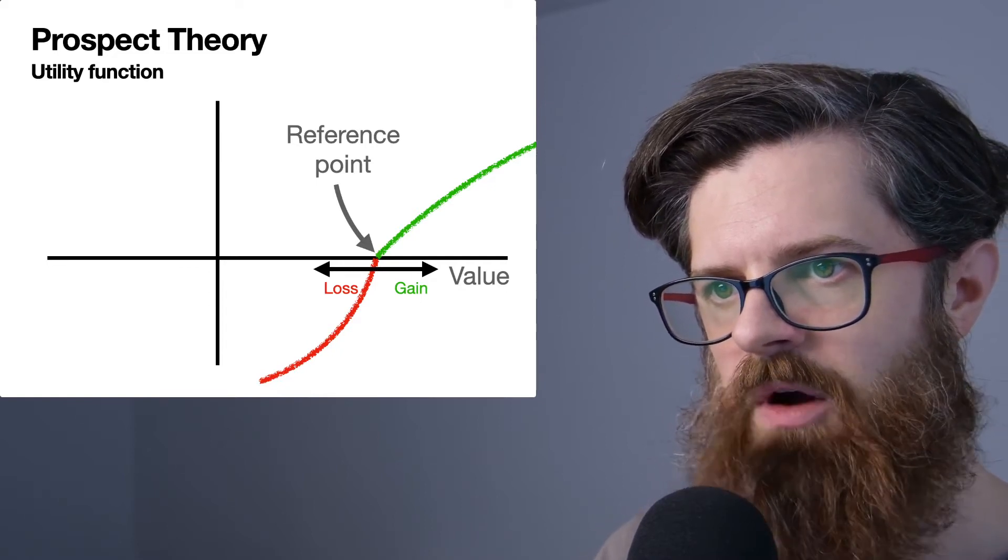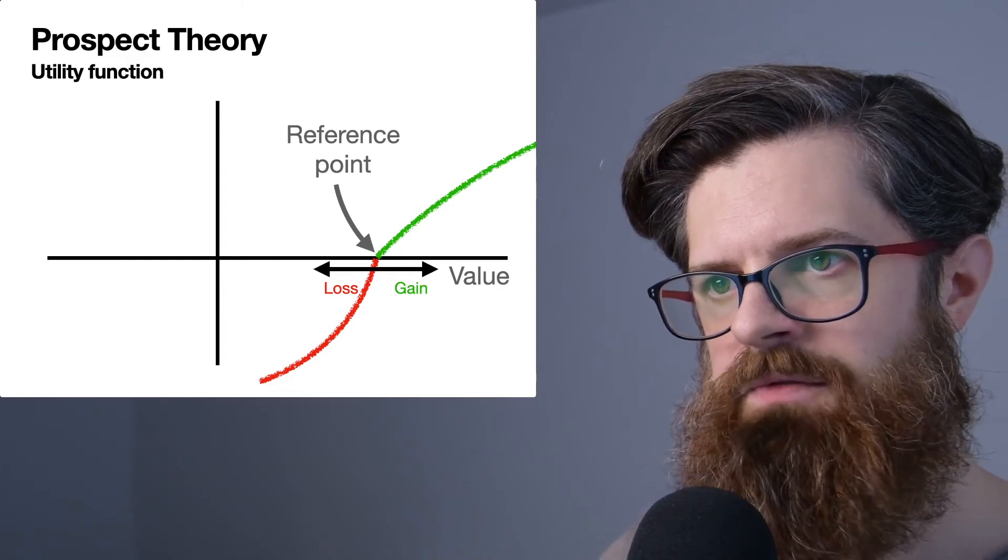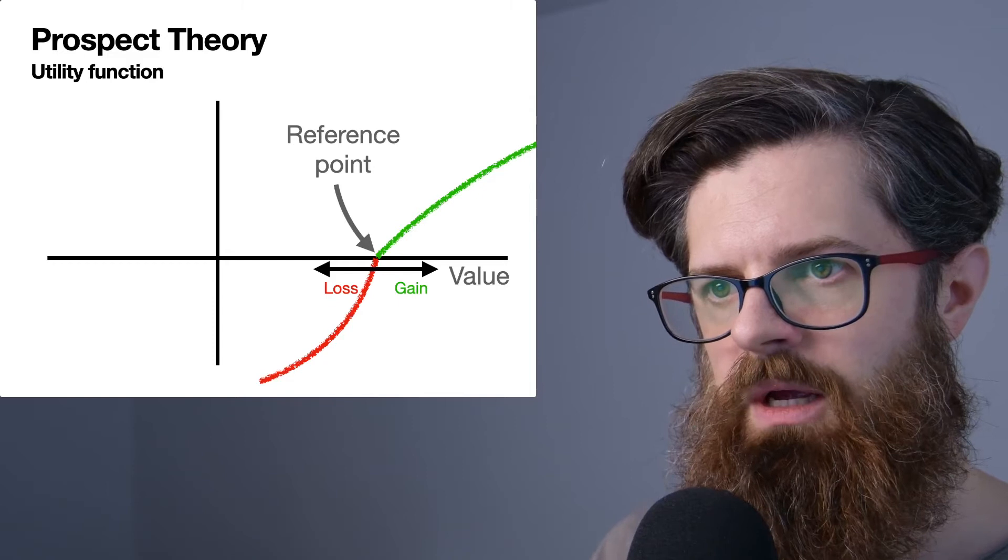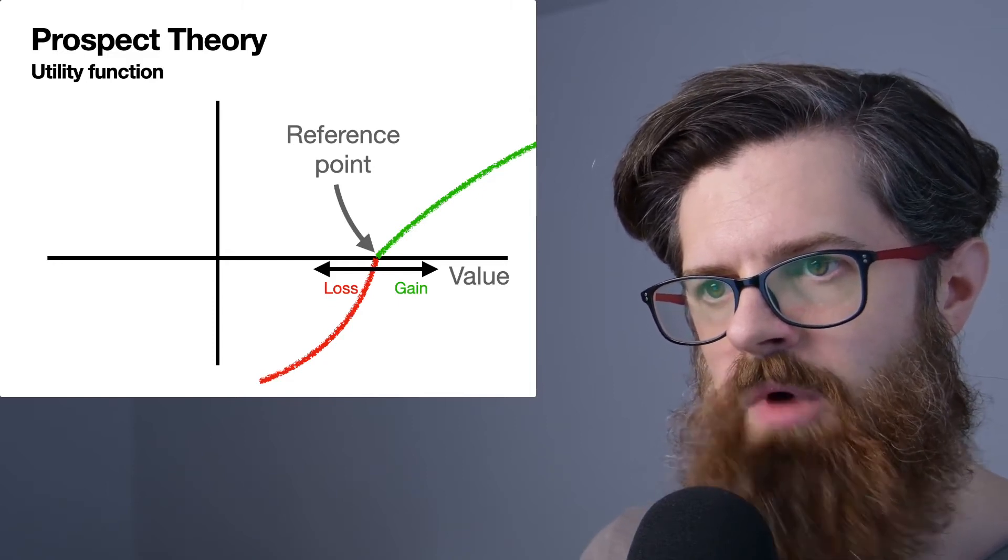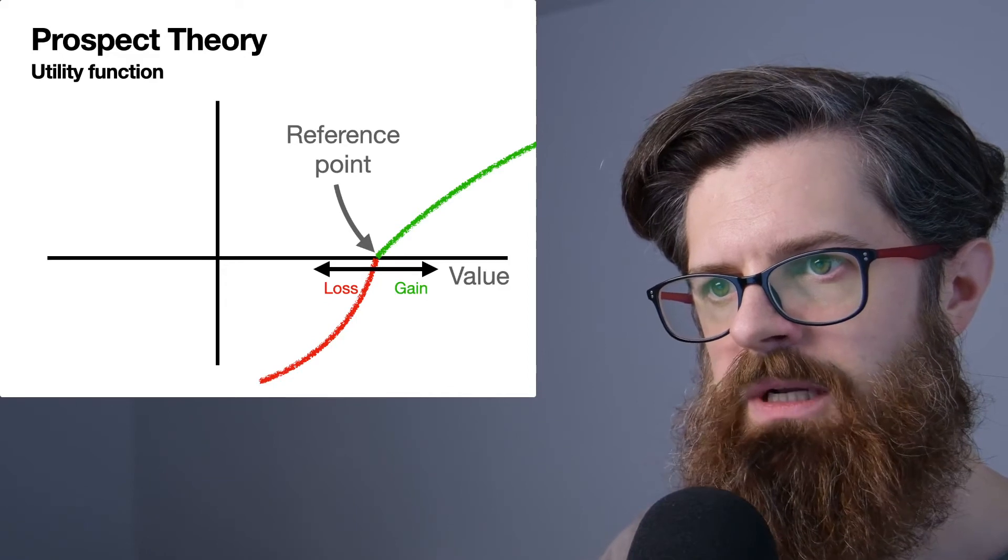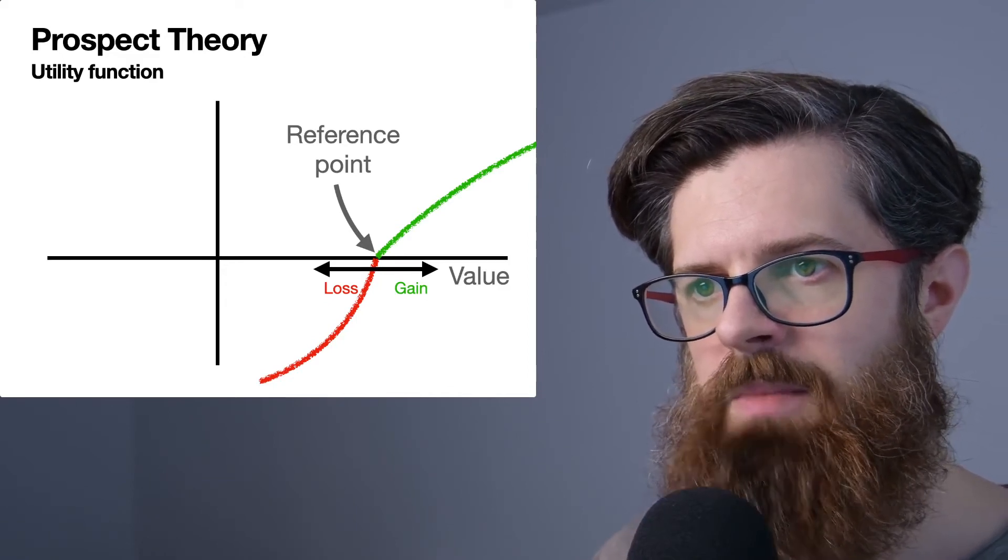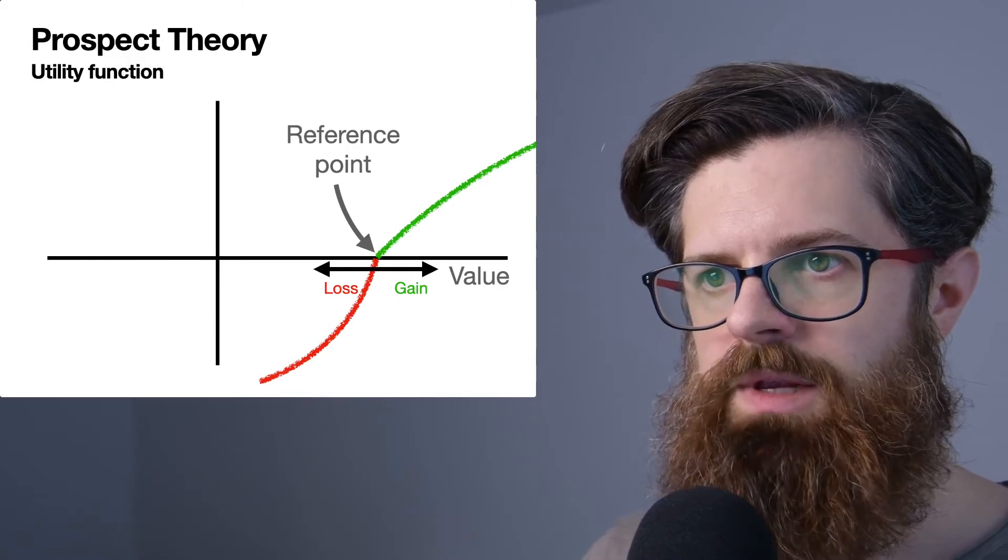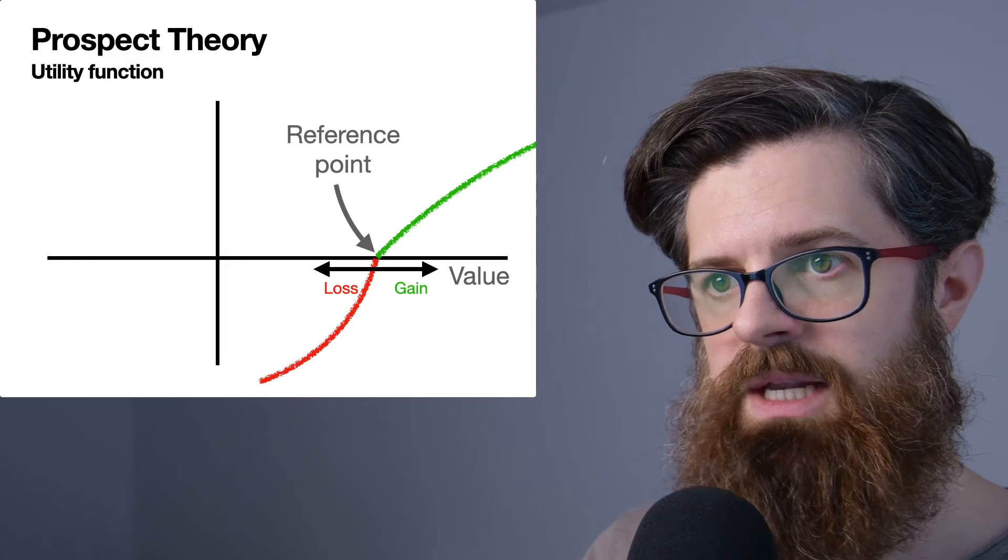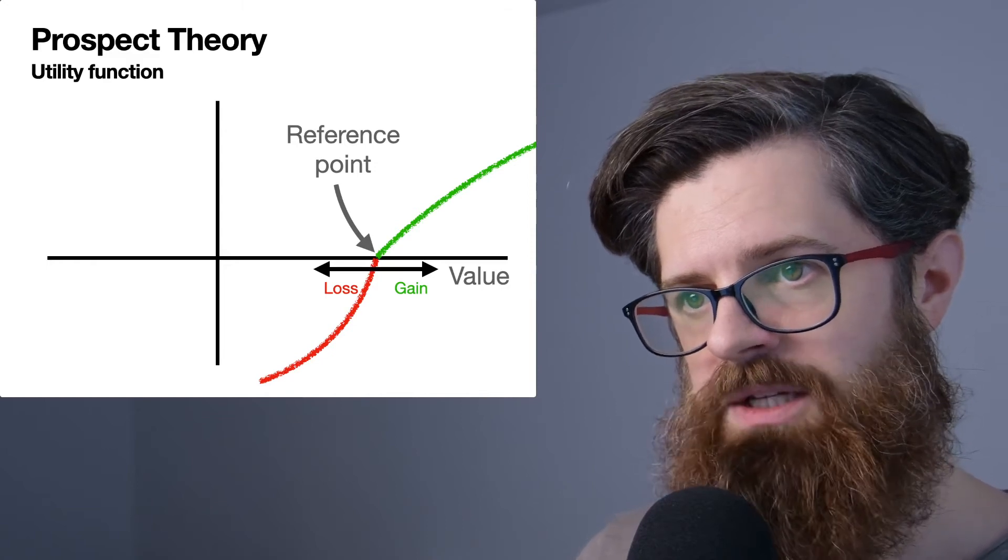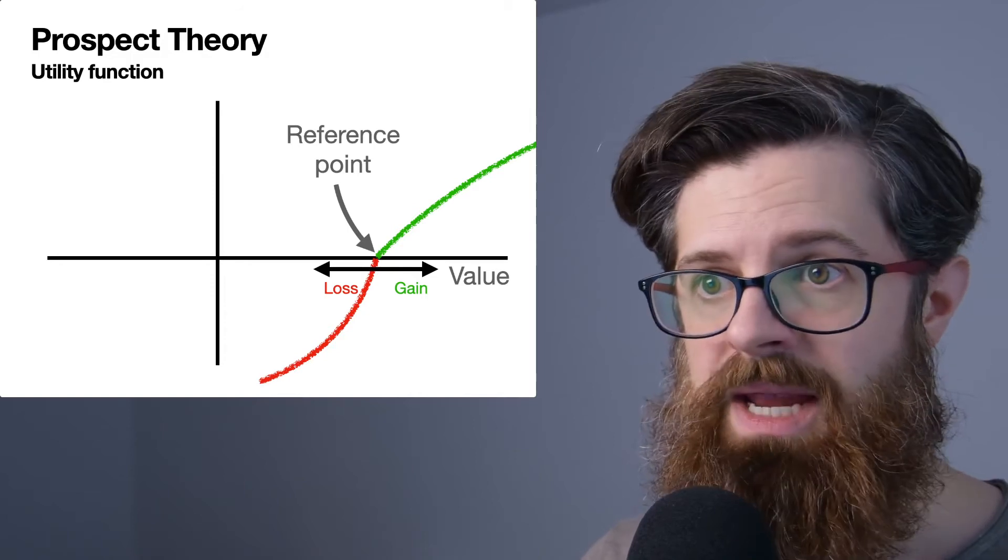The key point here is that the utility function in prospect theory is defined relative to this reference point. Another way of saying that is: rather than defining your utility relative to an absolute amount of money that you may have, the utility function in prospect theory is defined relative to the change in how much money you may have.